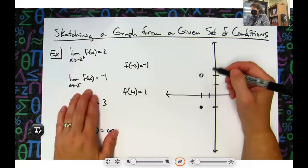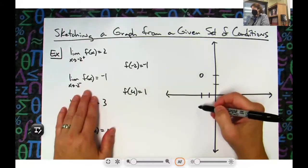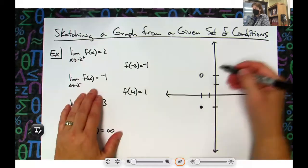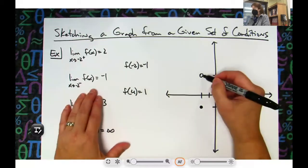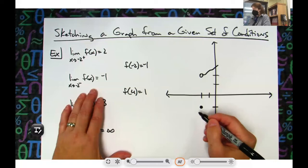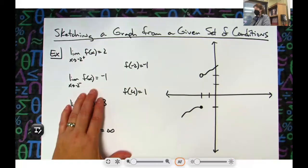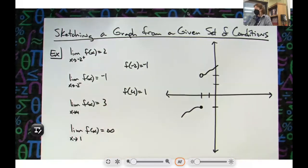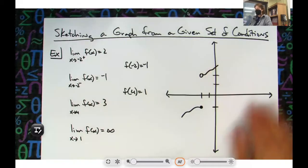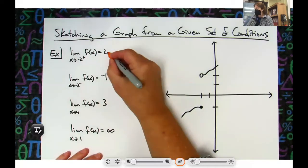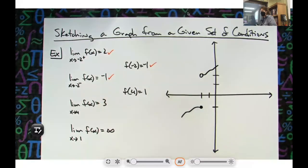Now, since this is f of negative 2, these three things kind of go together. That tells me where my open dot or closed dot could be. At f of negative 2, I've got to be at negative 1, so I really need a closed dot there, and then that would make the dot up here have to be open. If I want that limit from the left to be negative 1 and from the right — let's not go too far because I don't know what's going to be going on yet. Let's just go a little bit. I've taken care of this, I've taken care of this, I've taken care of this.